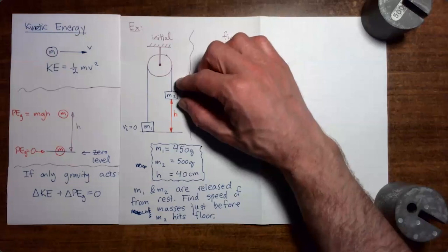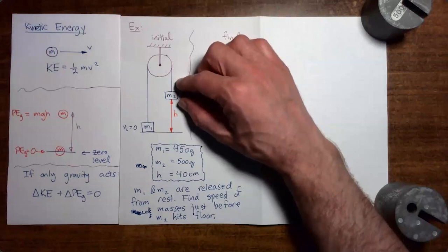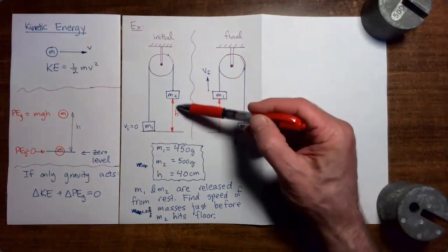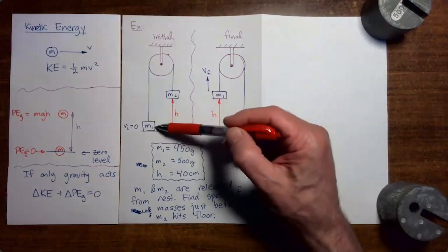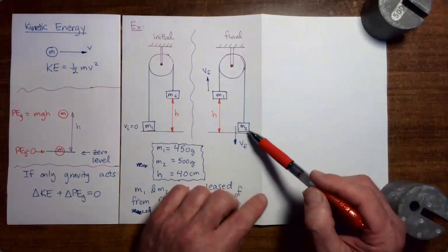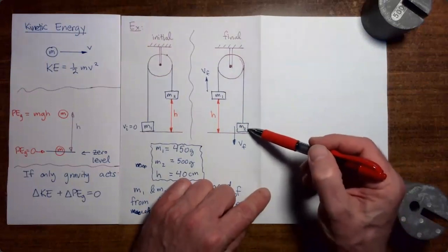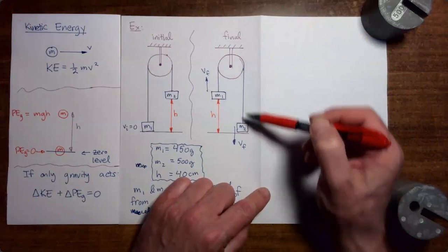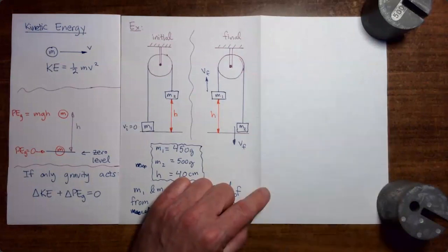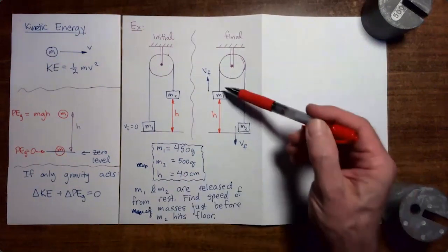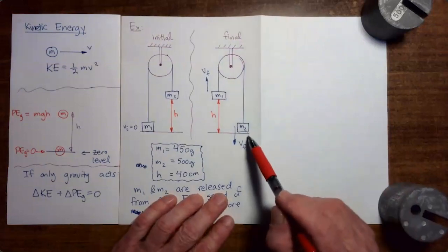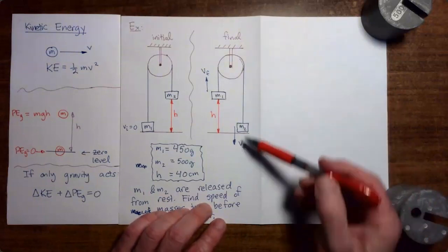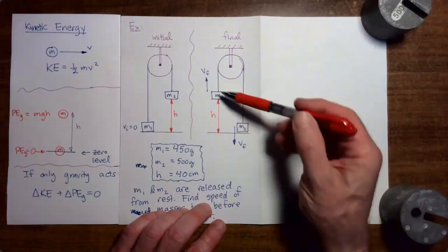What's going to happen when that thing holding the system in place releases? Mass 2, the heavier mass, is going to start to move down. Mass 1, the lighter mass, is going to get pulled up. A little bit later, mass 2 has almost reached the floor and will hit it. Meanwhile, mass 1 is going upward. We would like to find how fast the masses are moving immediately before mass 2 hits the floor. Because of the way the two masses are connected with the string, at this moment the two masses will be moving at the same speed.